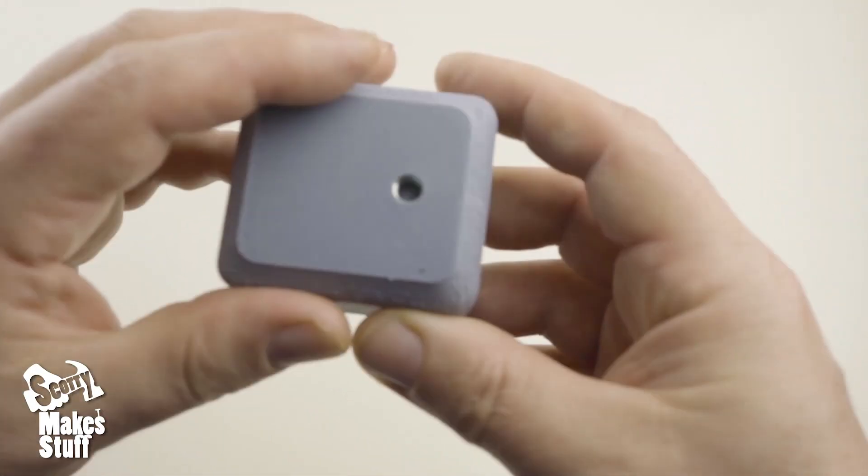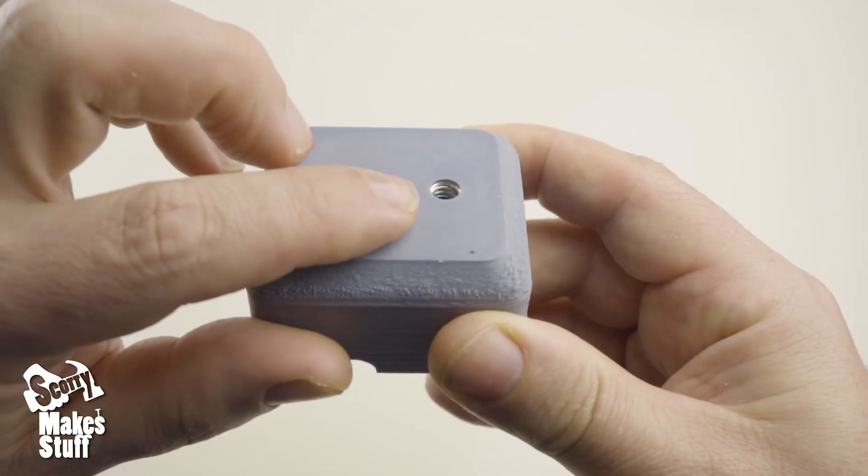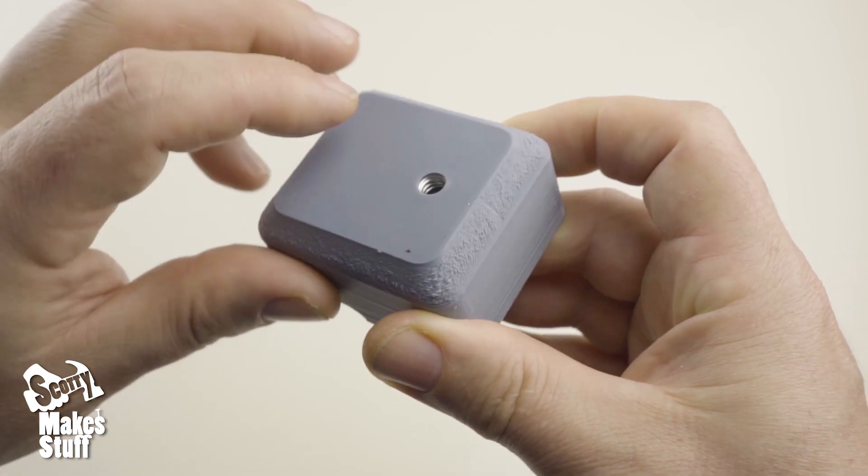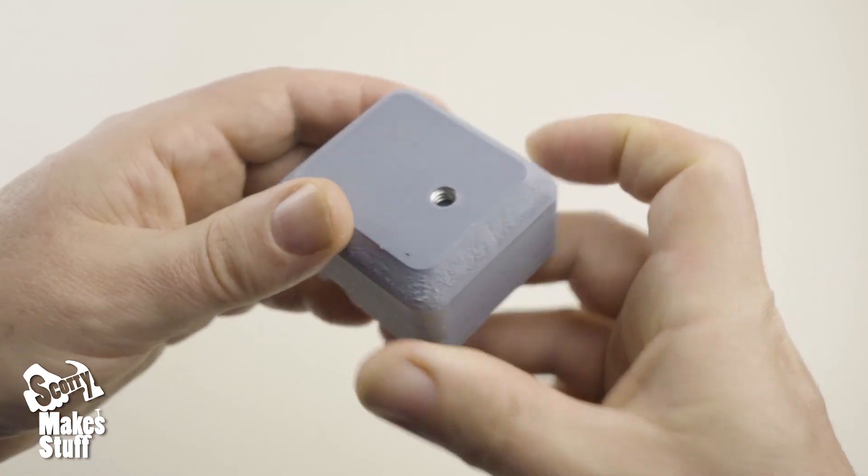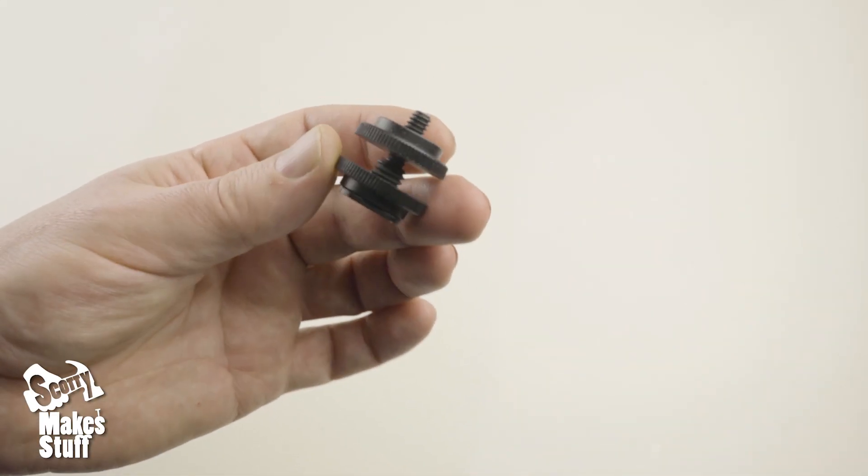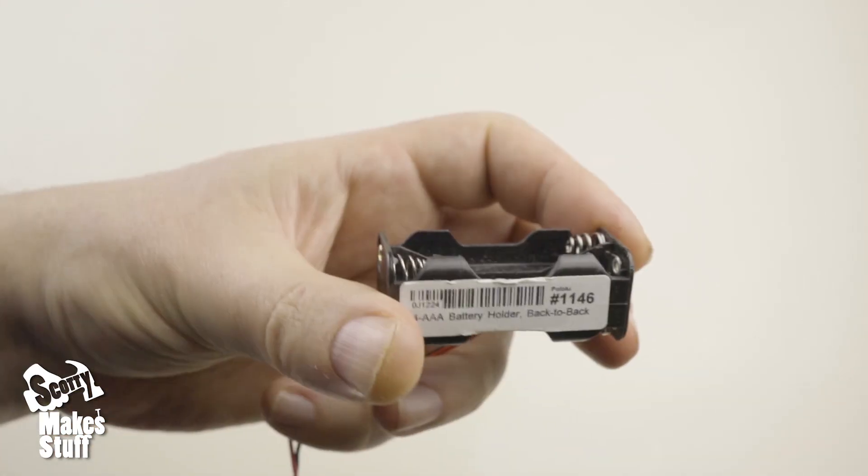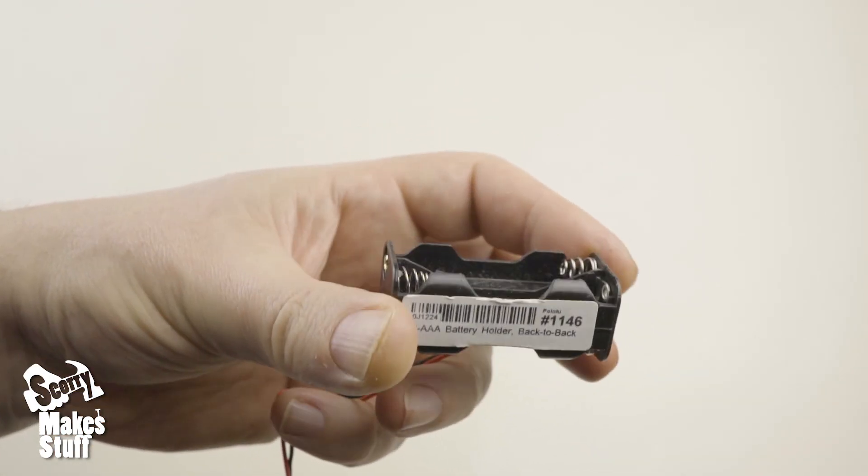Now you should also note that there's a captured nut in the bottom of the box and you need to stop the print just before it goes past that point. It's the double triple A battery holder.